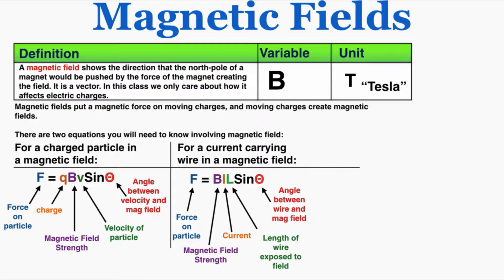The equation on the left is for a single charged particle moving in a magnetic field, and the equation on the right is for a current carrying wire in a magnetic field. Most of the variables are self-explanatory, except for theta—the angle between the velocity and the magnetic field, or the angle between the wire and the magnetic field.